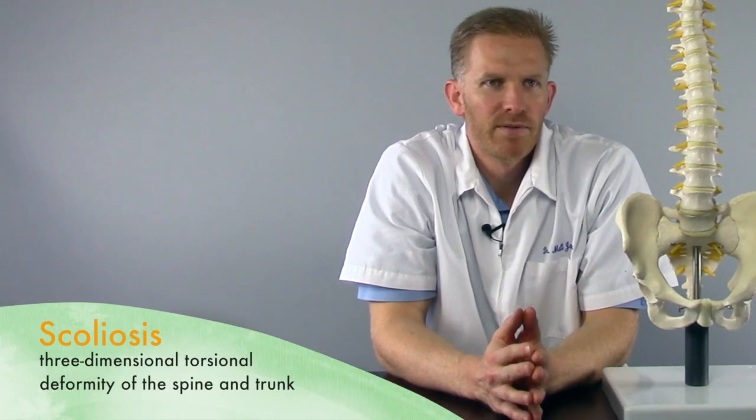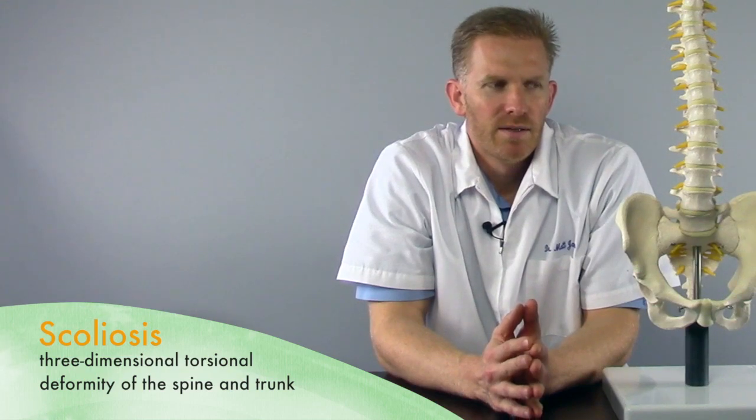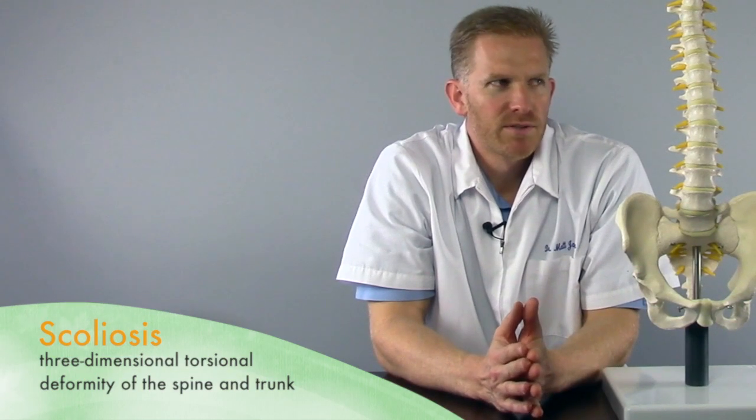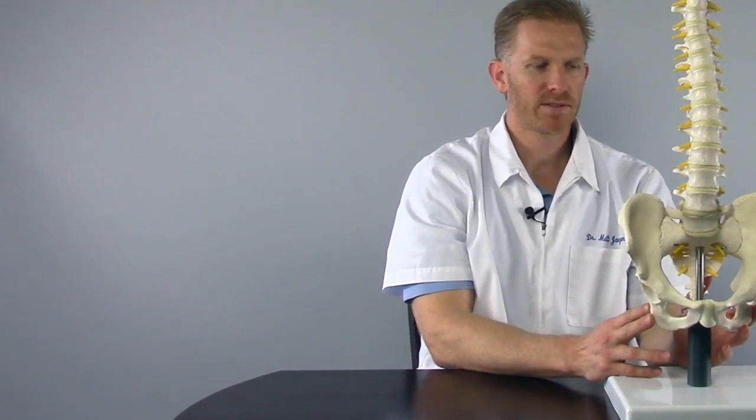Scoliosis officially is defined as a three-dimensional torsional deformity of the spine. To put that into a picture for you, let's start with a model of a normal spine. So here's a normal spine.